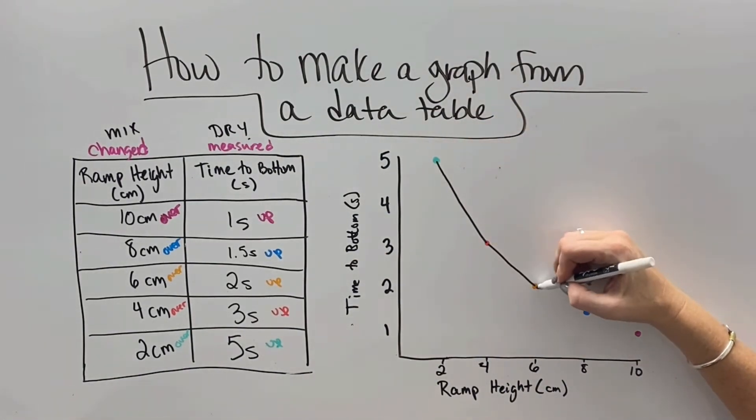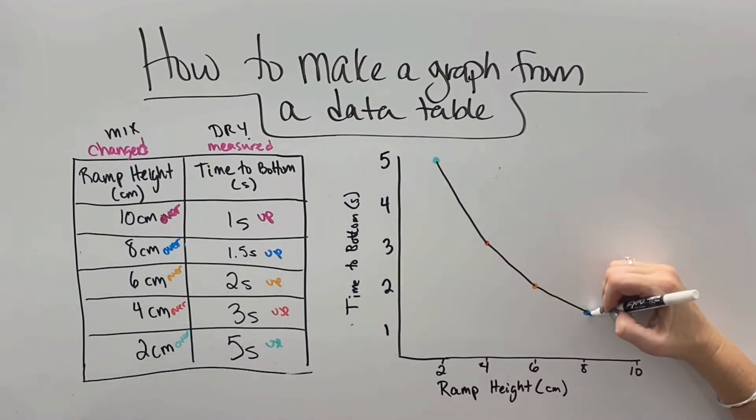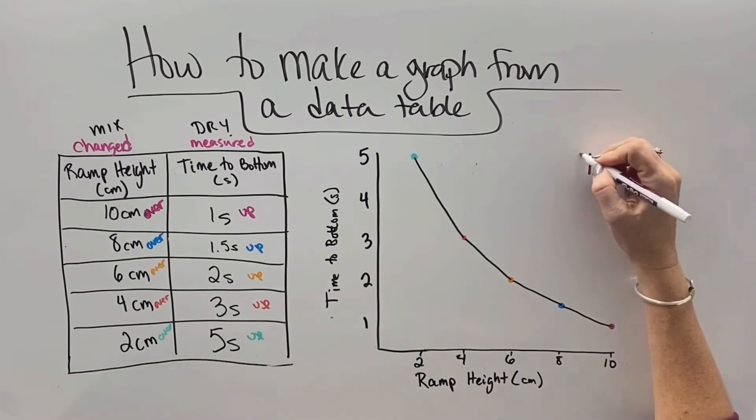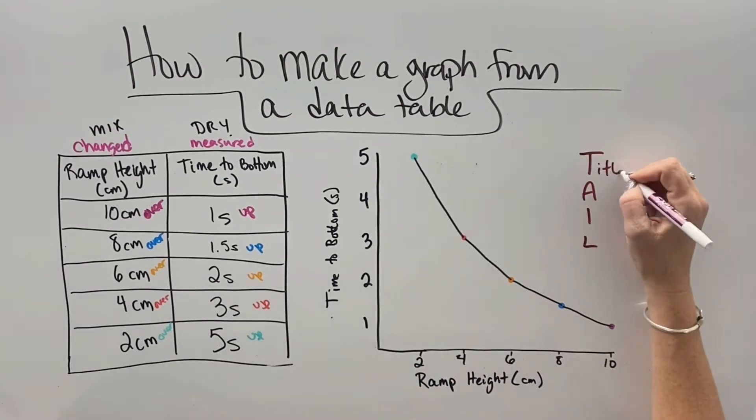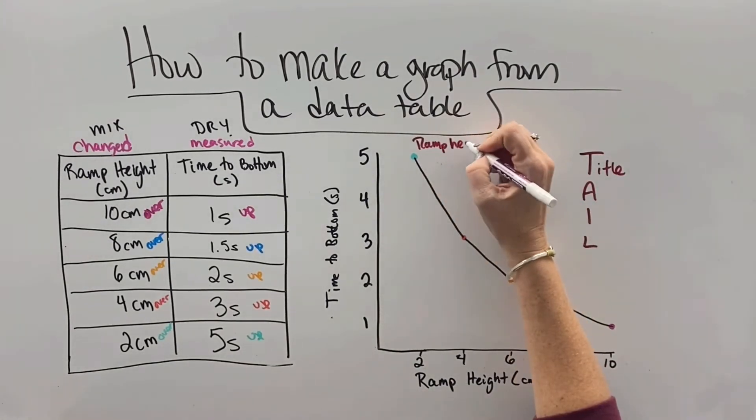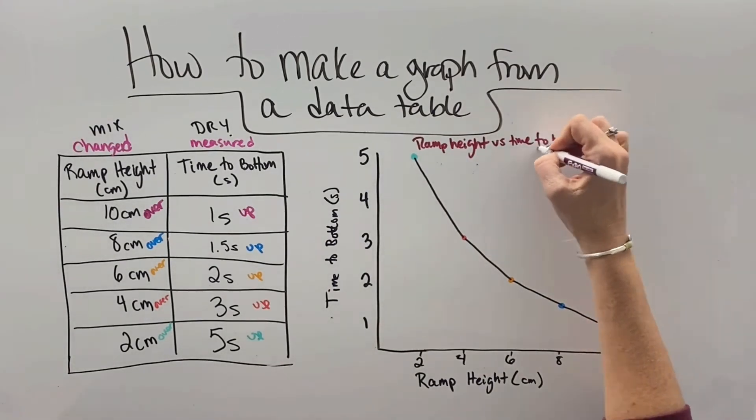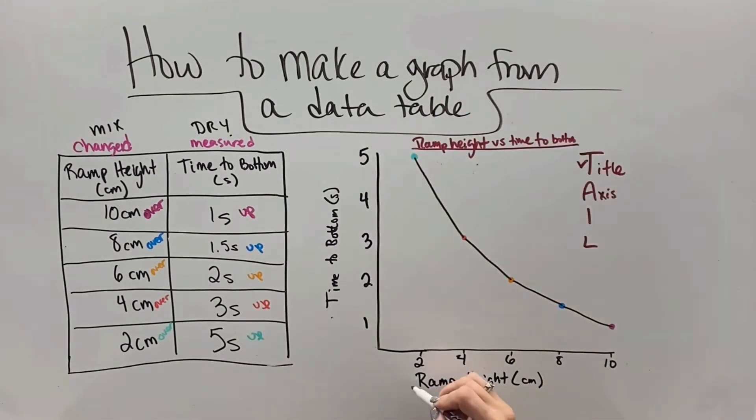Then we connect all of the dots, and we get our data trend. And so here we can see that as the ramp height increases, the time to the bottom is decreasing. For a complete graph, we need to make sure it has a title.